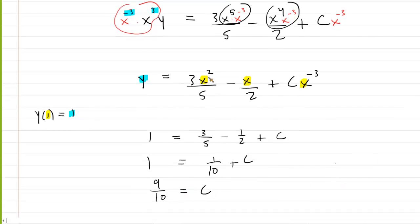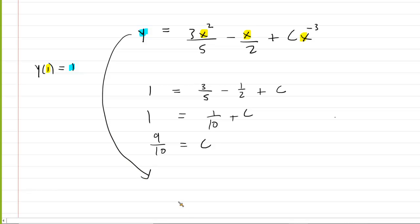Now, we can write down the final answer by plugging it into our solution here. So, we're going to have final answer. y equals 3x² over 5 minus x over 2 plus 9/10 x to the power of negative 3. This would be the correct answer to the question.